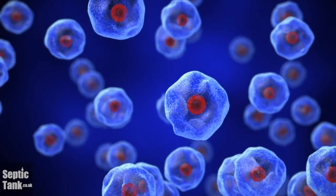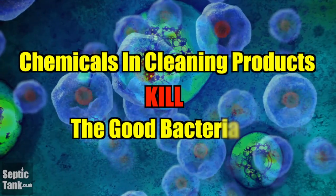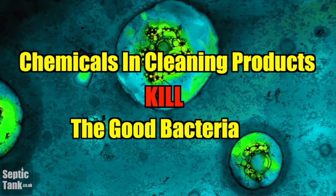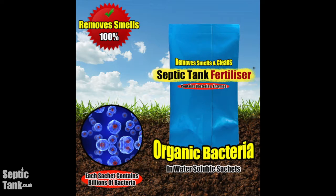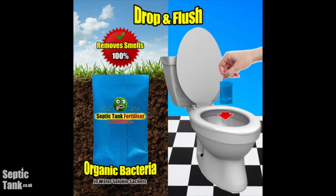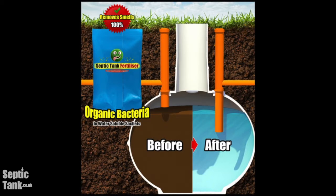As we've seen, chemicals in household cleaning products kill the bacteria and ecosystem inside a septic tank — the main reason why septic tanks develop problems. Septic tank fertilizer protects the septic tank from these harmful chemicals. Simply drop one water-soluble sachet into the toilet each month — it dissolves within 15 to 30 seconds, then just flush. The fertilizer puts millions of bacteria and enzymes back into your septic tank, revives dead systems, brings them back to life, and completely removes smells. It's organic, safe, easy to use, and comes free with every bucket of soakaway worms.